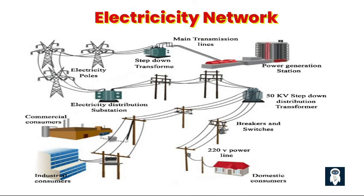Traditional distribution grids form the backbone of power systems, enabling the efficient delivery of electricity from transmission networks to end consumers. However, these grids face a myriad of challenges and inefficiencies that hinder their optimal performance — from aging infrastructure to limited monitoring capabilities. The vulnerabilities in traditional distribution grids have significant implications for both the reliability of power supply and the overall sustainability of the grid.